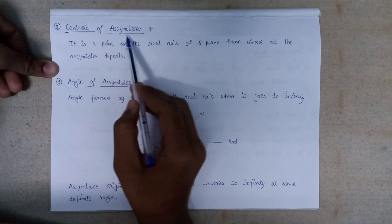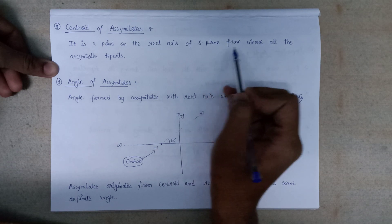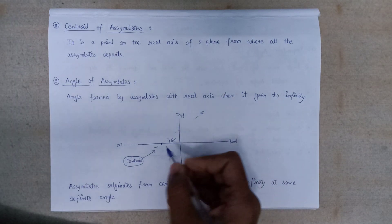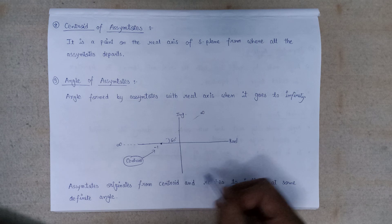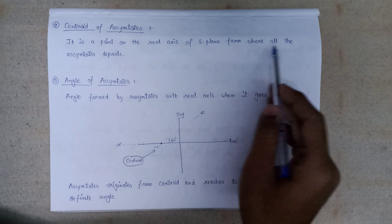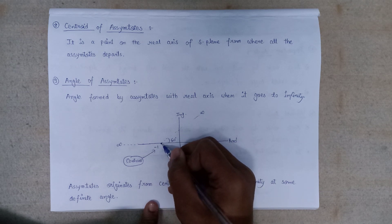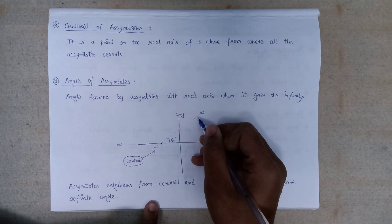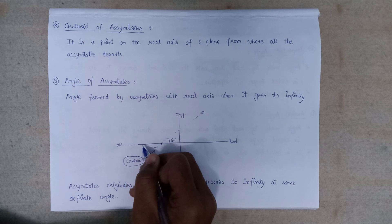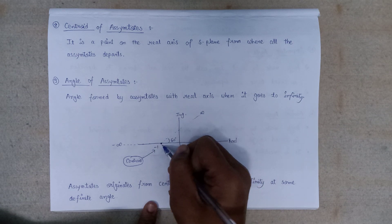Point seven is the centroid of asymptotes. The centroid is defined as a point on the real axis of the S-plane from where all asymptotes depart. For example, if the centroid is at −1, asymptotes depart from −1 toward +∞ and −∞ along the real axis.